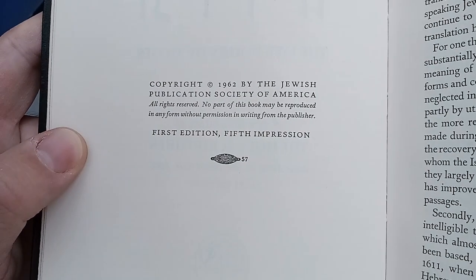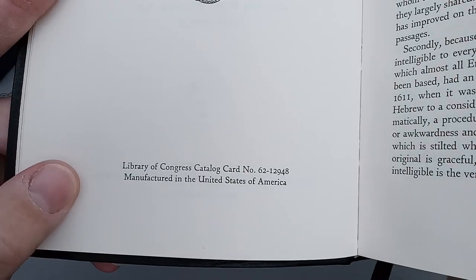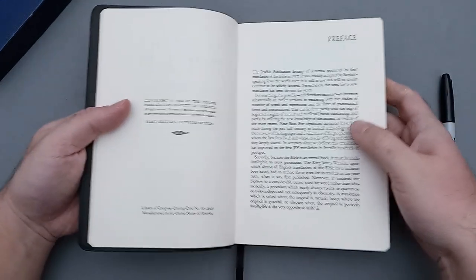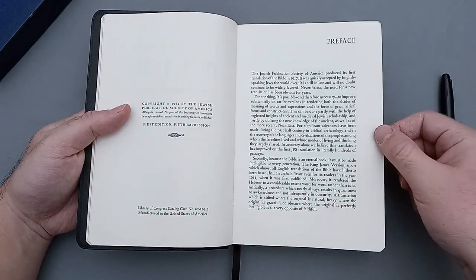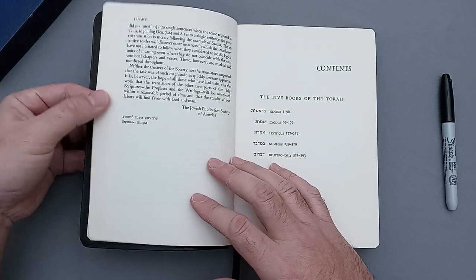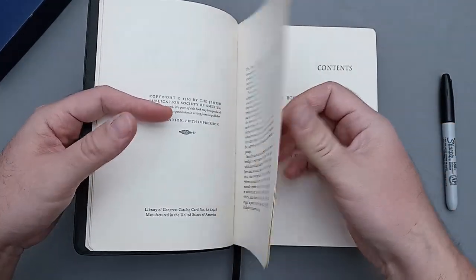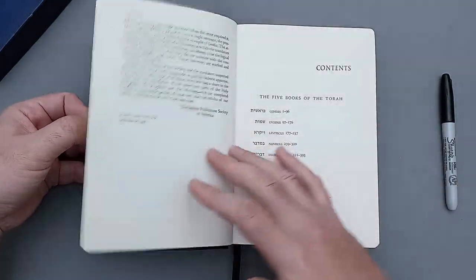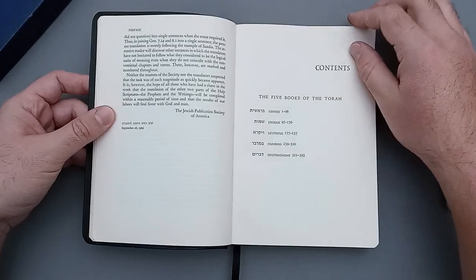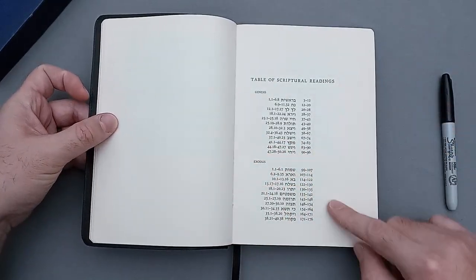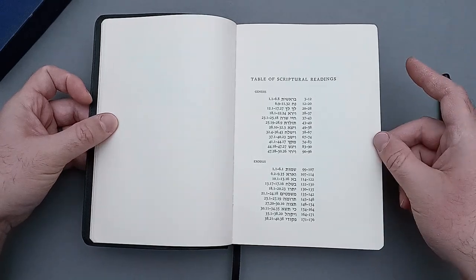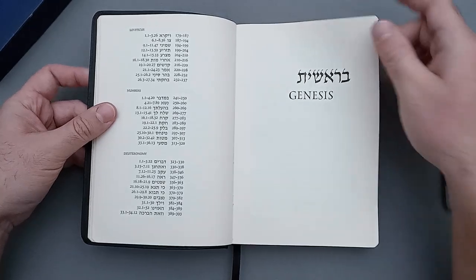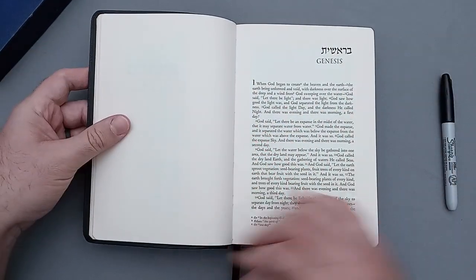Copyright page, this is a 1962 edition from what I can assume, judging by the fact this is 1962 here. Then your preface. It's kind of hard for me to tell if I'm only turning one page because the paper is so thick. Then your table of contents, and then your table of scriptural readings, and then Genesis title page.